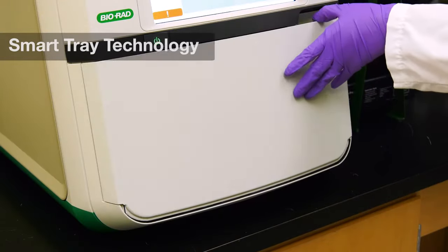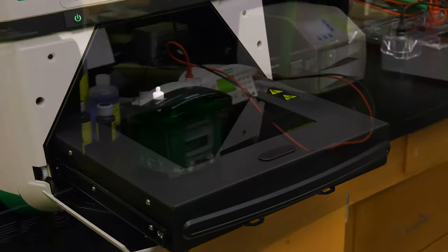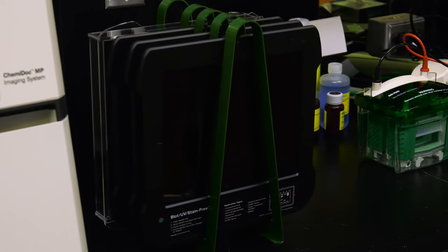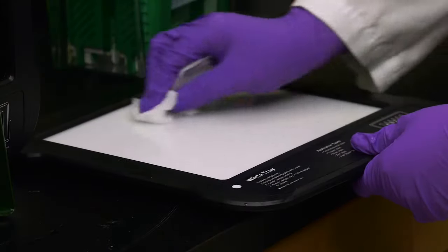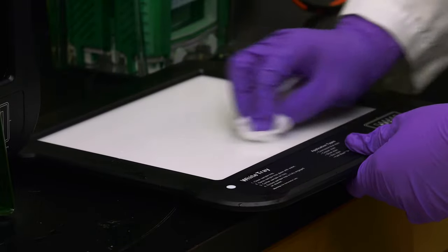To begin, open the imager and pull out the transilluminator. Remember that all gels and blots are always imaged on one of three trays. It is easy but important to clean the trays. Simply use DI water and a Kim wipe for the best performance.